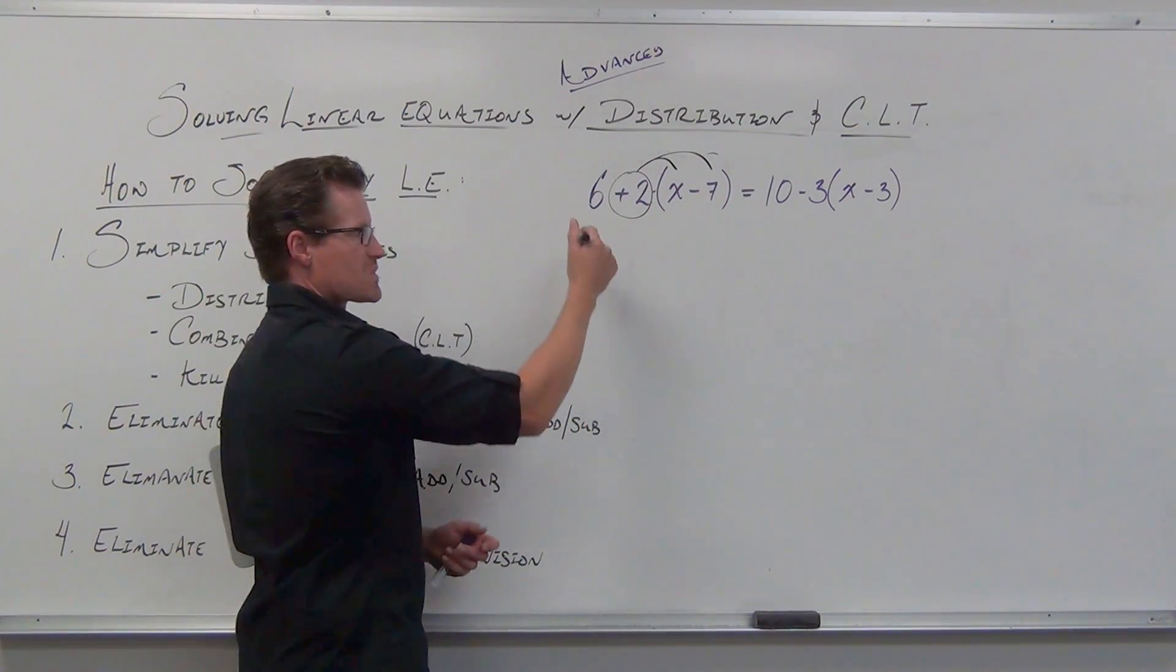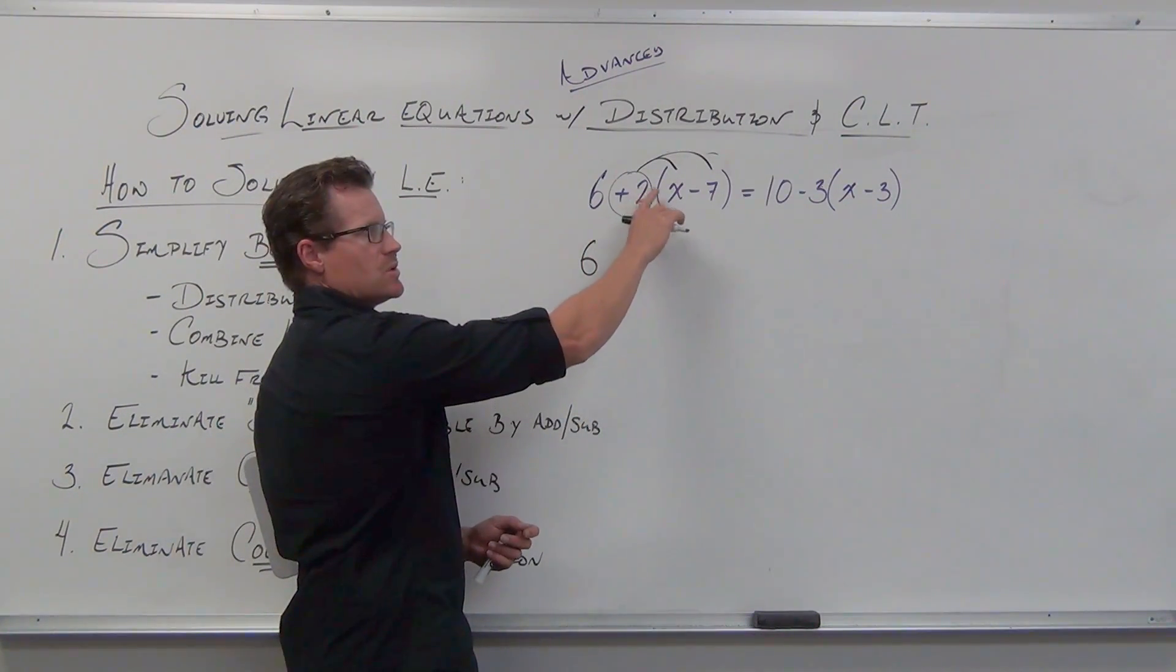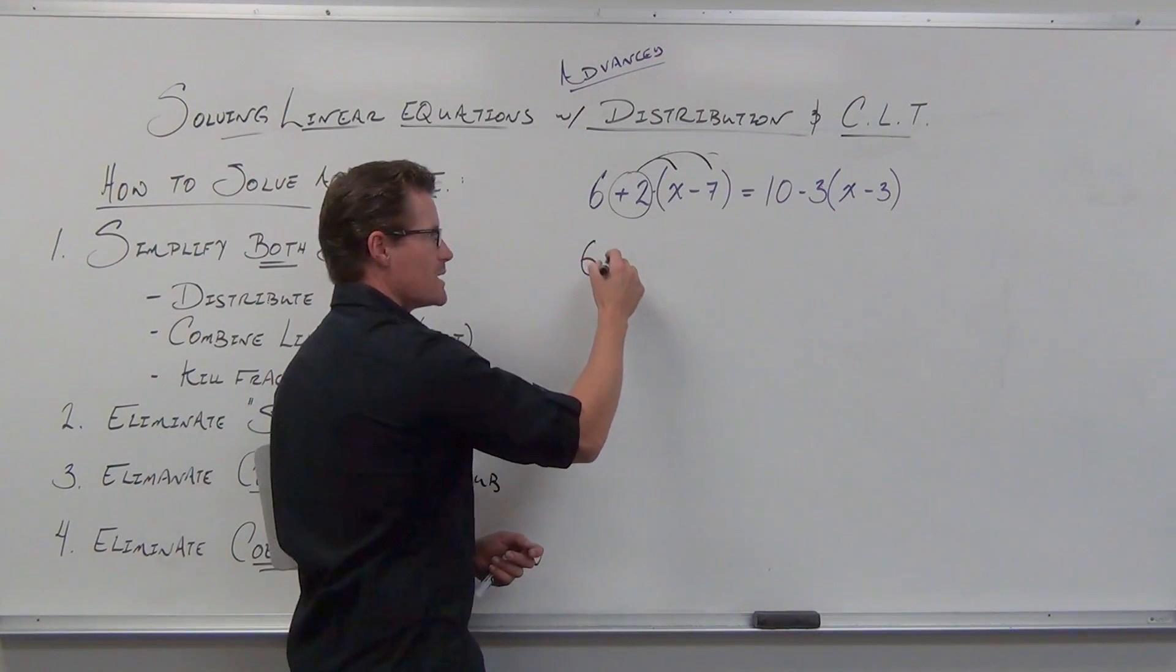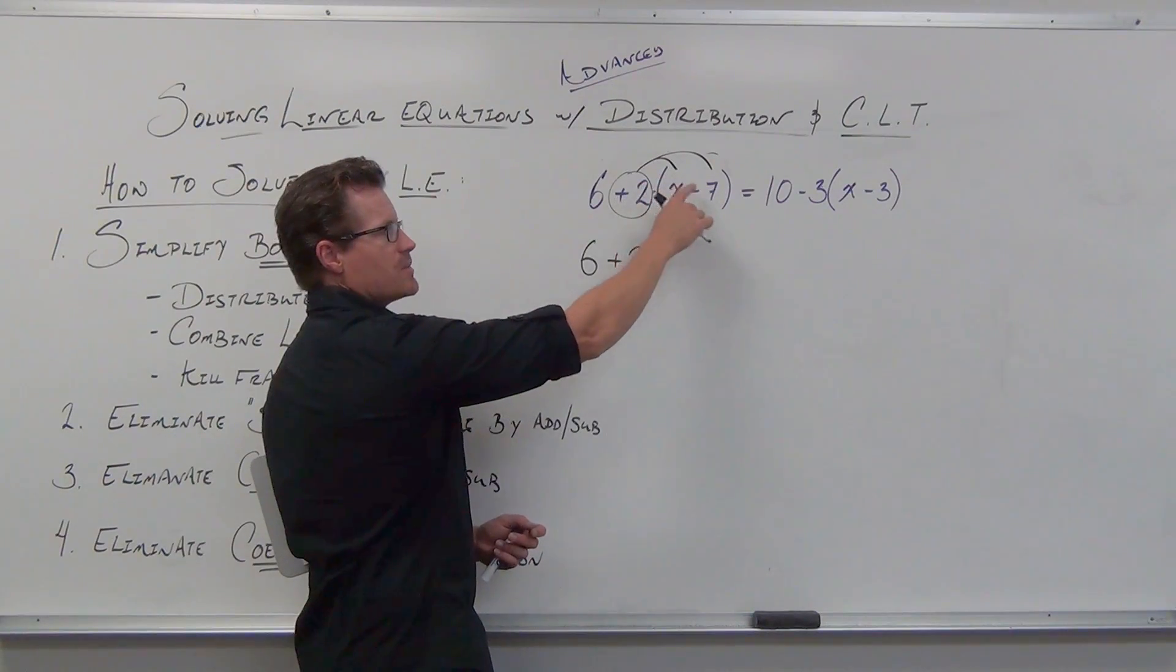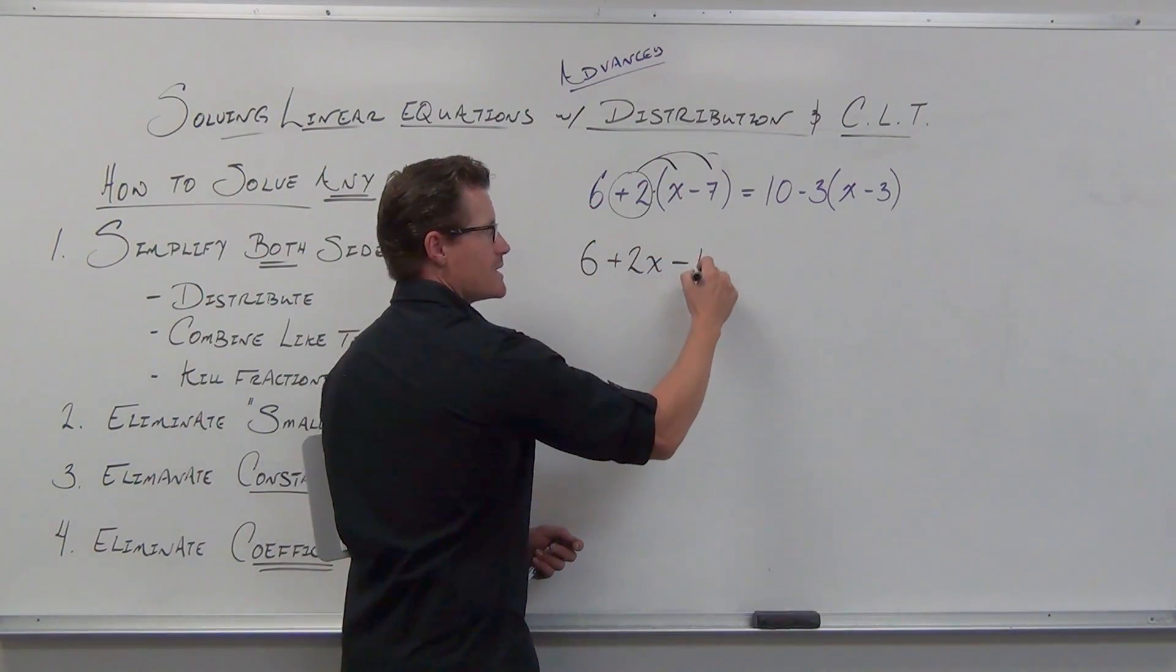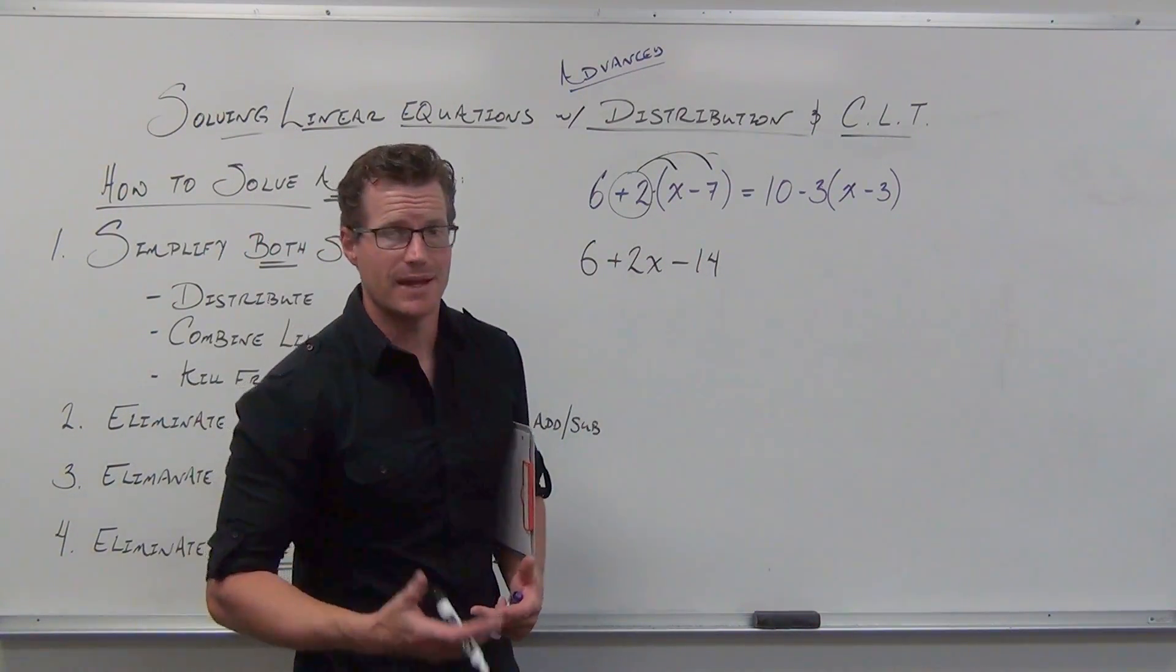So we're going to distribute. What do you do with the six? Just leave it hanging on. So we're going to leave that six. Positive two times positive x is positive two x. We're going to think positive, write down plus. Positive two times negative seven is negative fourteen. We're going to think negative fourteen, write down minus fourteen. That's distributed.